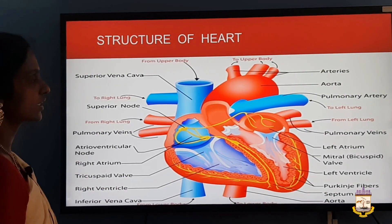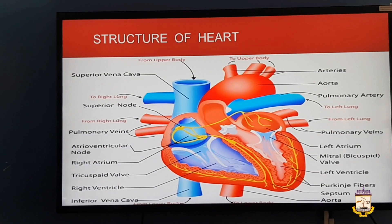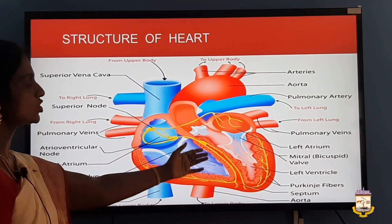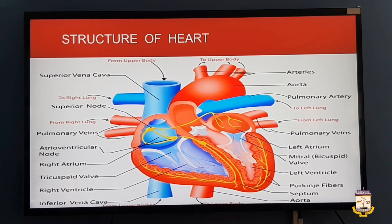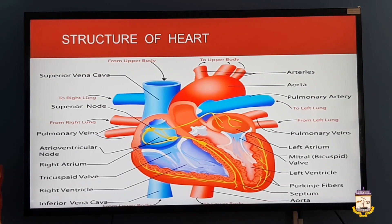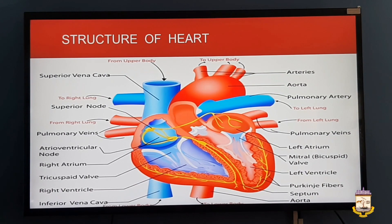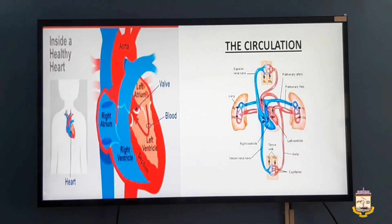On the left side, the left auricle receives oxygenated blood from the pulmonary vein from the lungs. It then passes to the left ventricle through the bicuspid valve. From the left ventricle, the blood flows through the aorta to various parts of the body. All the parts are clearly marked in the picture.